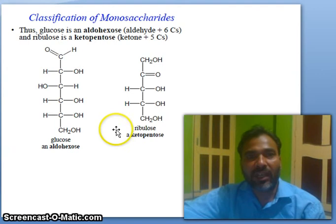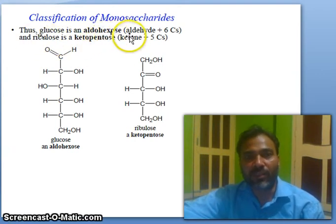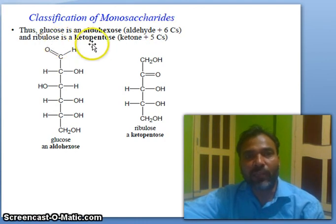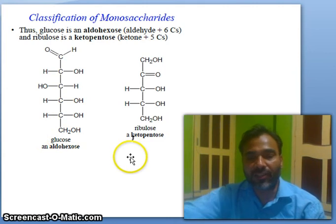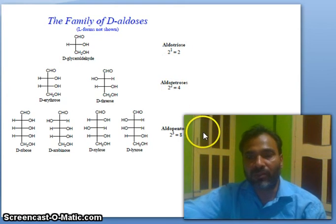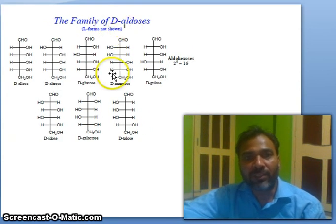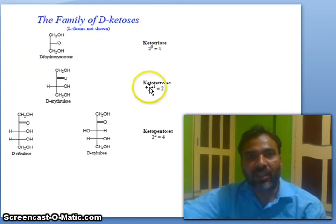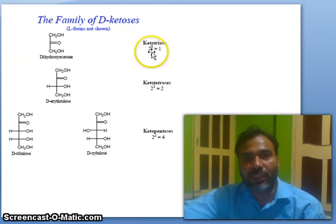Thus glucose is an aldo-hexose (aldehyde plus six carbons) and ribulose is a ketopentose (ketone plus five carbons). The family of D-aldoses includes: aldo-triose, aldo-tetrose, aldopentose, and aldohexose. The family of D-ketoses includes: ketotriose, keto-tetrose, ketopentose, and D-fructose.